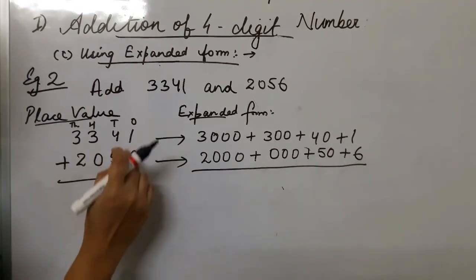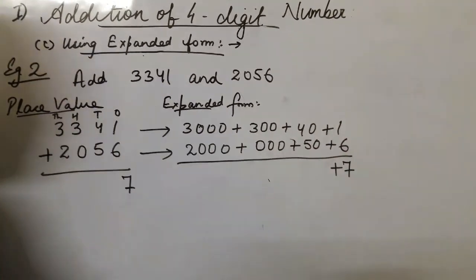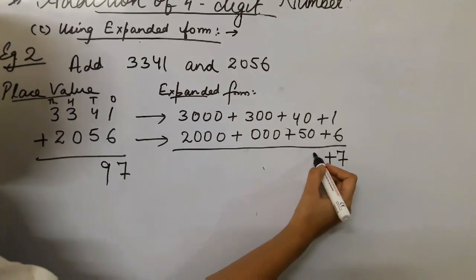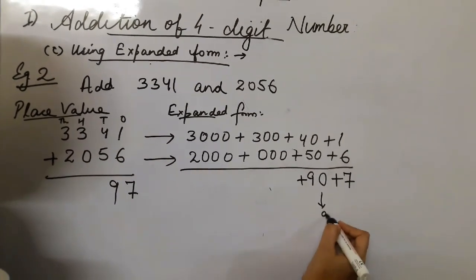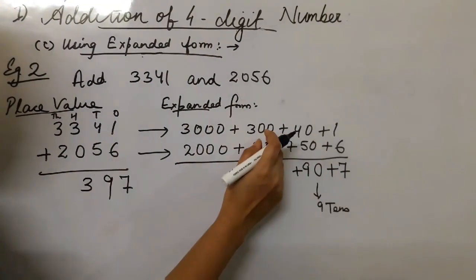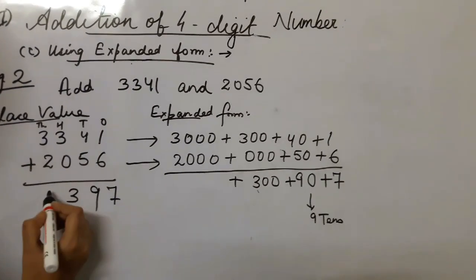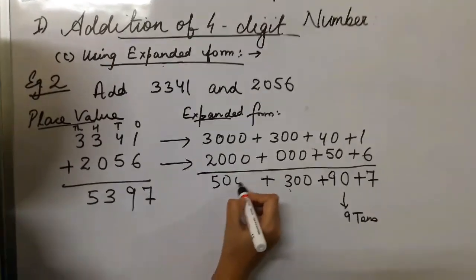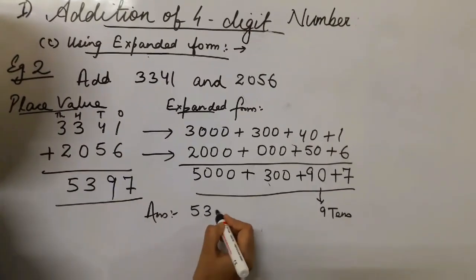Now add the ones first: 1 one plus 6 ones gives 7 ones. Add the tens: 4 tens plus 5 tens gives 9 tens, that is 90. Add the hundreds: 300 plus 0 hundreds gives 300. Add the thousands: 3,000 plus 2,000 gives 5,000. So the answer is 5,397.